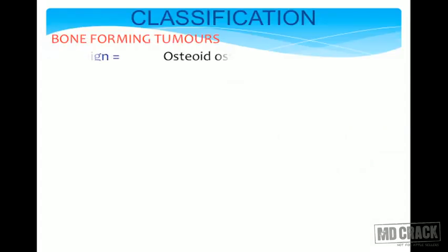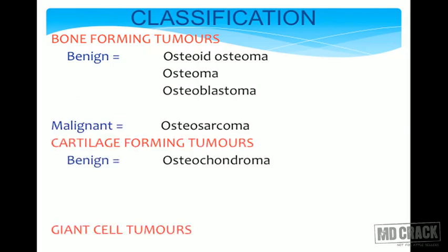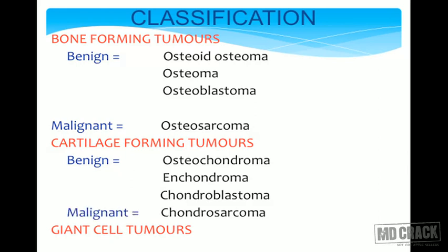The classification of bone tumors can be divided into bone-forming tumors, cartilage-forming tumors, and giant cell tumors. In bone-forming tumors, the benign ones are osteoma and osteoblastoma, while the malignant bone-forming tumor is osteosarcoma. All malignant tumors carry the word 'sarcoma' — you must remember that.